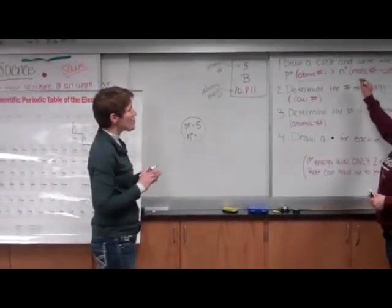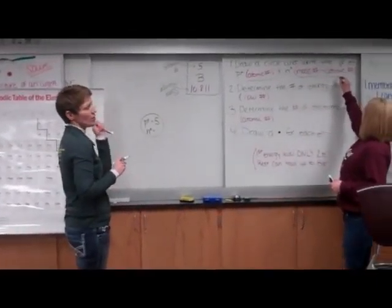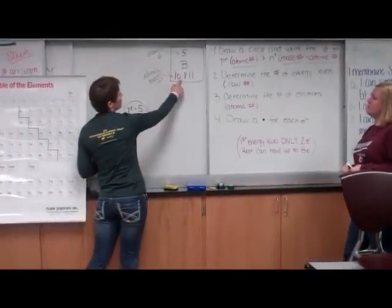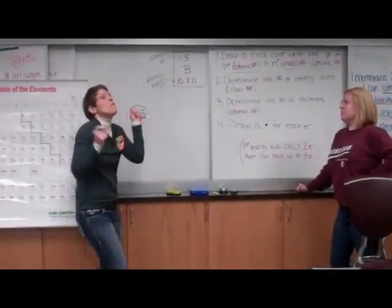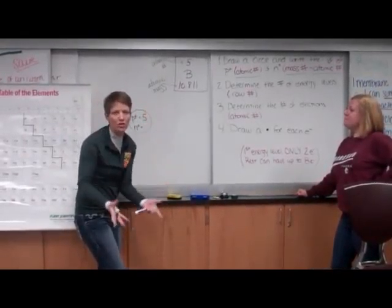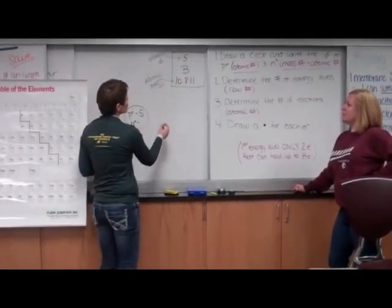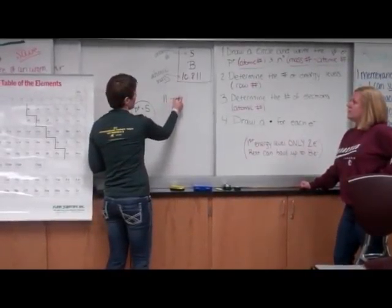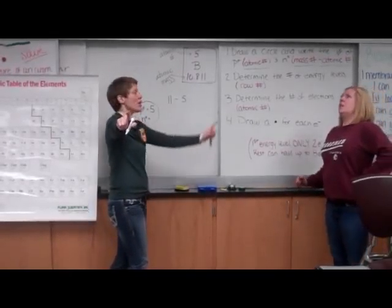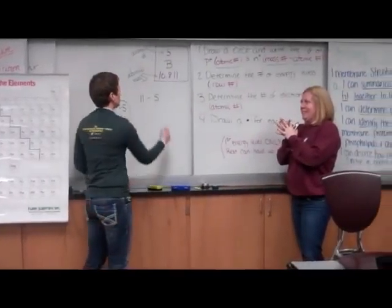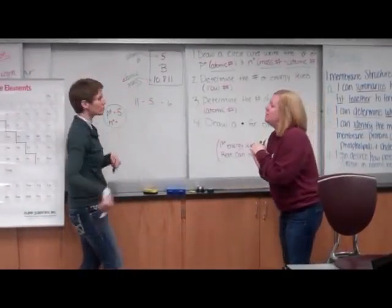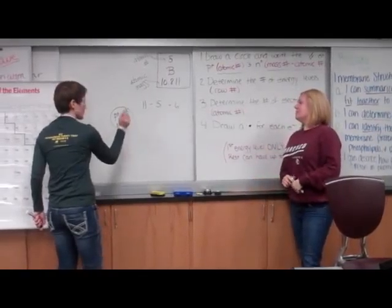Neutrons, you got to get that by the mass number minus the atomic number. So this atomic mass, even though it reads 10.811, I know you guys are like I must use all the numbers. No, rounding, good. So 10.8 rounds to 11. So I have 11 minus 5 and I'm going to do this without a calculator, ladies and gentlemen, I know, prepare yourselves. That would be six. Oh beautiful, Mrs. E, so beautiful, so smart.